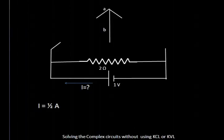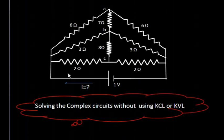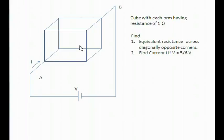This was a very complex network and with an easy method we found out the solution. Now let us move ahead to find out one more very interesting question, which is very repetitively asked in competitive exams. This is a cube and each arm has a resistance of 1 ohm. We have to find out the equivalent resistance of the cube across diagonally opposite corners, and also find the current if the voltage source V is 5/6 volt. We are utilizing this question to understand the concept of equipotential points.